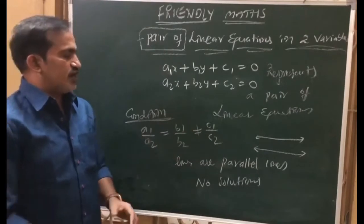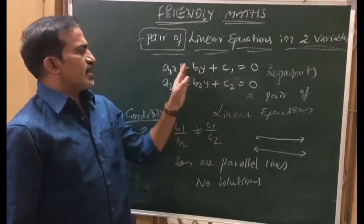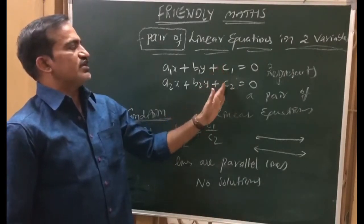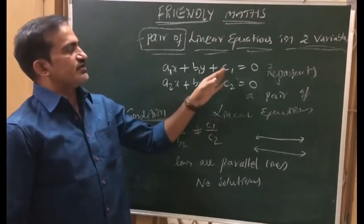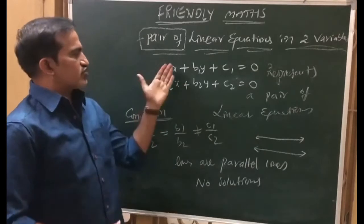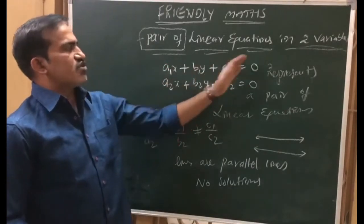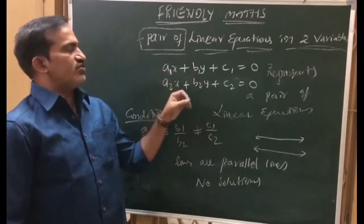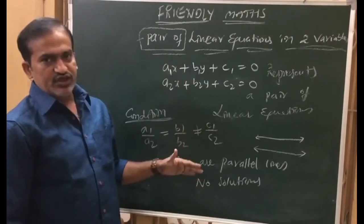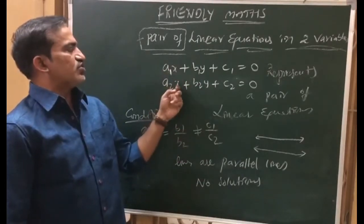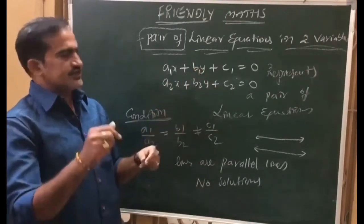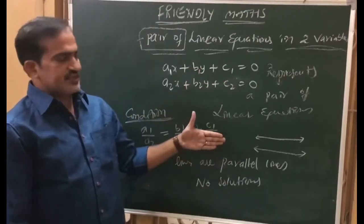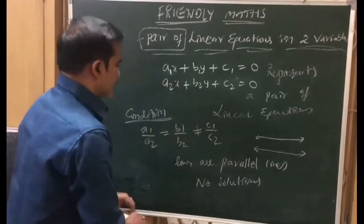One important point: both constants must be on the same side. Sometimes to create confusion, one constant is given on this side and another on that side. If you take it as is, that is wrong. The structure should be the same — x term, y term, constant. If the equation is not in standard form, first write it in standard form, then observe the ratios. x coefficient ratio not equal to y coefficient ratio means intersecting lines; x and y coefficient ratios equal but constant ratio different means parallel lines.